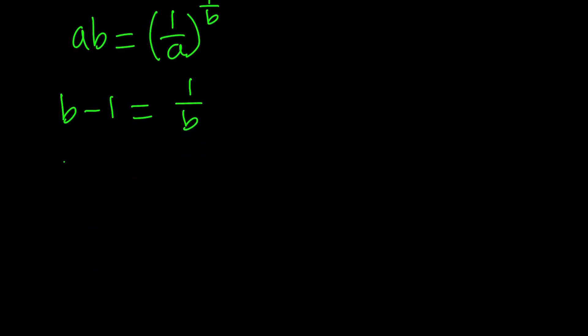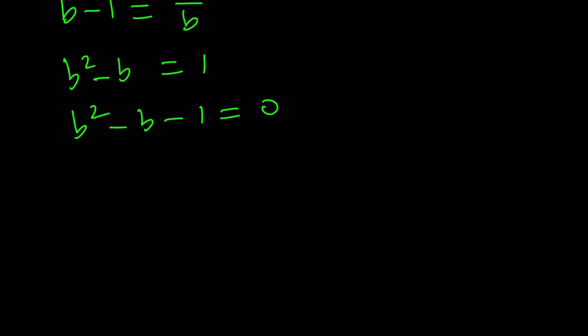Cross multiply. Of course, b can't be 0. We know that b squared minus b is equal to 1. b squared minus b minus 1 is equal to 0. If you solve this quadratic, you're going to get b equals negative b plus or minus the square root of b squared minus 4ac, which is 5. The golden ratio emerges again. Now, we've got two b values. One of them is 1 plus root 5 over 2, and the other one is 1 minus root 5 over 2. Which one are we going to use? Probably both.